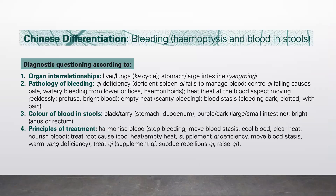If it is due to qi deficiency, it means deficient spleen qi failing to contain blood, or sinking center qi causing reckless bleeding — resulting in pale, watery bleeding from lower orifices and hemorrhoids. If due to heat, it means heat in the blood aspect moving recklessly, producing profuse bright-red blood. If due to empty heat, there will be scanty bleeding. If due to blood stasis, there will be dark-colored bleeding with pain.